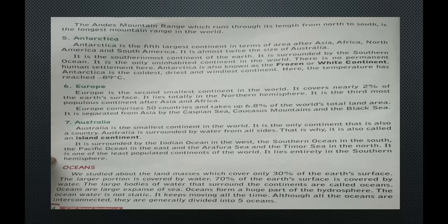Now we will discuss oceans. We studied about land masses which cover only 30% of the earth's surface — 70% of the earth's surface is covered by water. The large bodies of water that surround the continents are called oceans. Oceans are large expanses of sea and form a huge part of the hydrosphere. The ocean water is not static; it keeps moving all the time. Although all the oceans are interconnected, they are generally divided into five oceans.